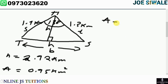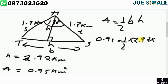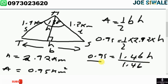Using Area = ½ × b × h: 0.95 = ½ × 2.92 × h, which gives 0.95 = 1.46 × h. Dividing both sides by 1.46, we get h = 0.95 ÷ 1.46, which equals 0.65 kilometers.